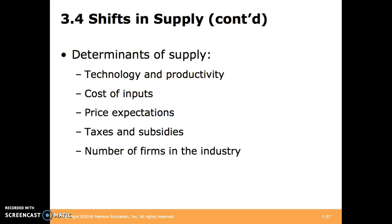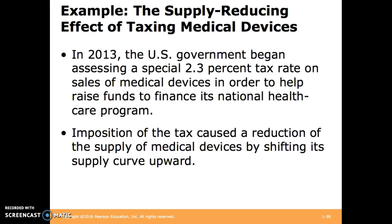Several things can affect the supply curve. Some of the more important are technology and productivity, cost of inputs, price expectations, taxes and subsidies, and the number of firms in the industry. Here is an example of the supply curve shifting due to a new tax by the government.